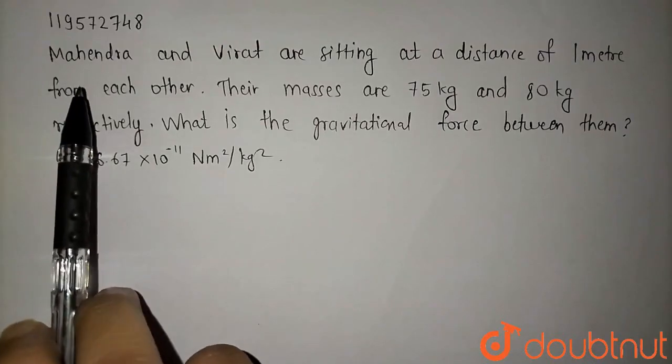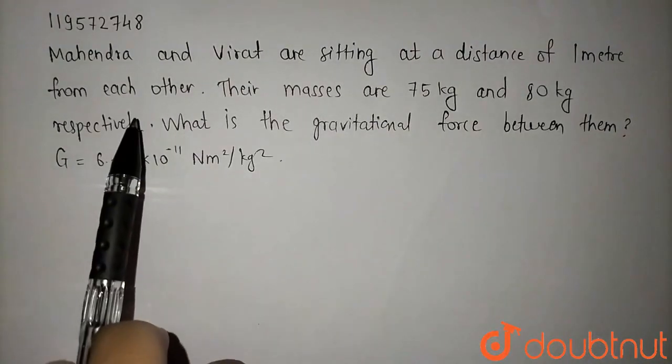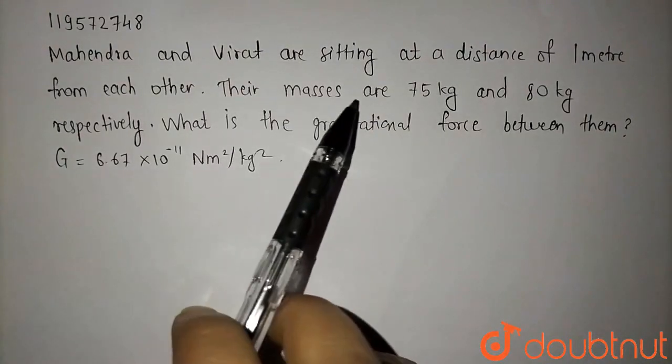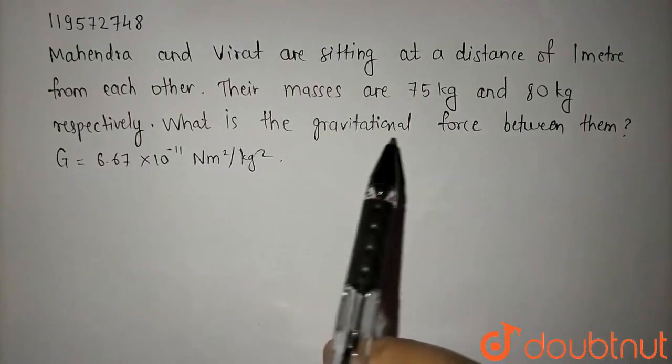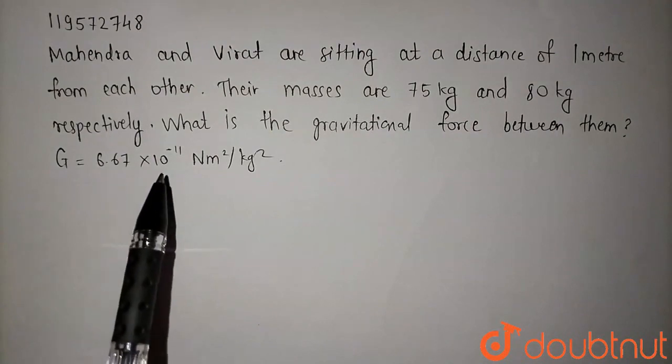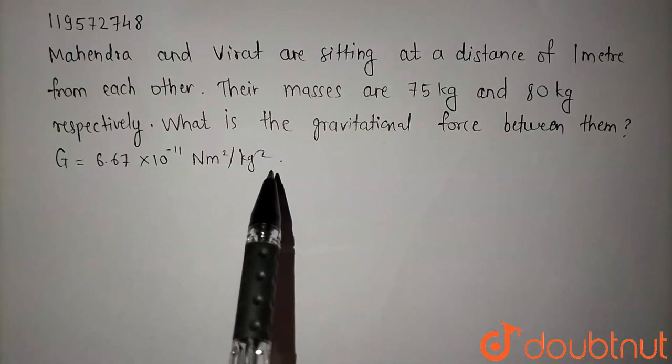Welcome to doubtnet. The question is: Mahendra and Virat are sitting at a distance of 1 meter from each other. Their masses are 75 kg and 80 kg respectively. What is the gravitational force between them? G is equal to 6.67 into 10 to the minus 11 newton meter square per kg square.